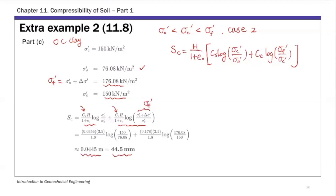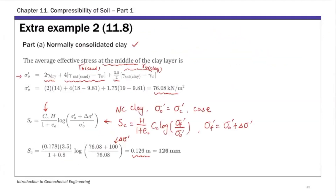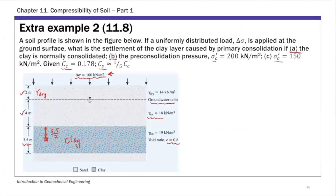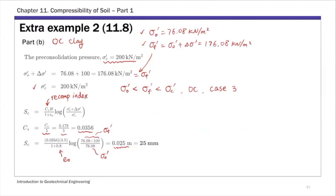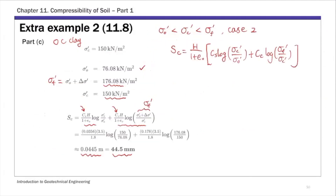This is example 2, which covers all three calculation cases: part A for normally consolidated clay — Case 1; part B for overconsolidated clay — Case 3; and part C for overconsolidated clay — Case 2.